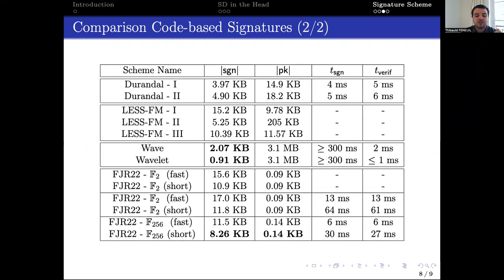Now, let us compare our scheme with all the other code-based signatures. We are far from having the shortest signatures. However, our scheme outperforms all the signatures when considering the sum of the size of the signature and the public key.